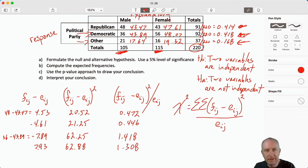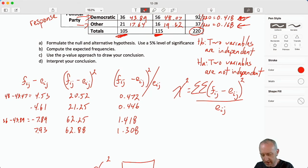Now I'm into the next and last row for Other. 21 minus 17.64 squared, divided by 17.64, 0.64. And finally the last one, 16 minus 19.32, square this, divide by 19.32, and there we go, finally.